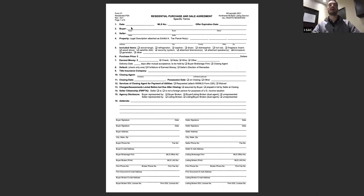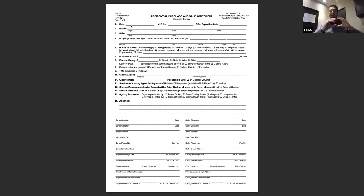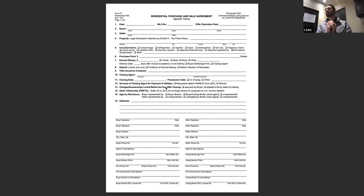Line one, top left — that's the date of the purchase and sale. This is really important. A lot of people make this mistake: this date is a reference date used to connect every other addendum in the contract. This date never changes. If you write an offer today and send it tomorrow, you can still use today's date. If you write a new offer for the same listing a month later, use a new date.